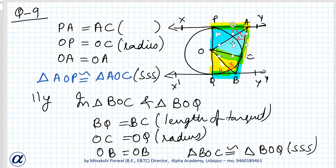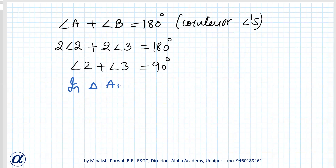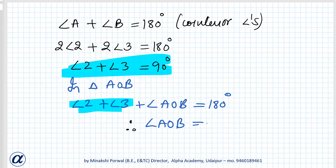In triangle AOB, angle 2 + angle 3 + angle AOB = 180°. Since angle 2 + angle 3 = 90°, we get angle AOB = 180° − 90° = 90°. Hence proved.